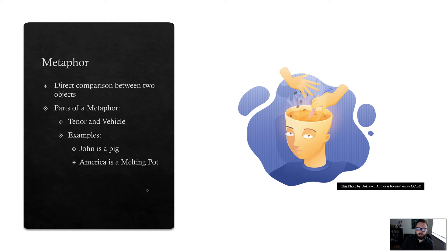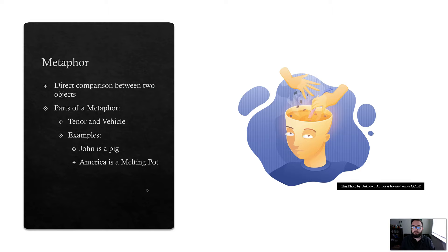For example: 'John is a pig.' John is the tenor and pig is the vehicle. Is John literally a pig? No, he's a person. But what we're saying is that John is not the best person — he's kind of filthy, kind of gross, not behaving in a particularly gentlemanly fashion. Our second example: 'America is a melting pot.' Is the United States literally a melting pot? No, it's a country. But we have this idea of so many people from all over the world with different belief systems and structures all coming together — and that's the US. That's our metaphor.